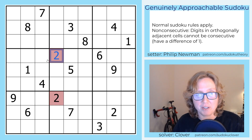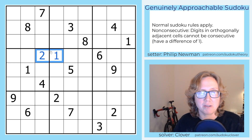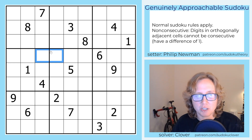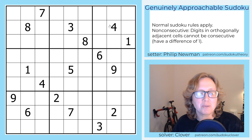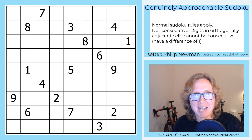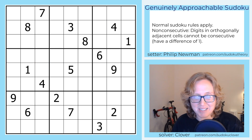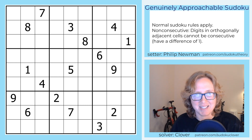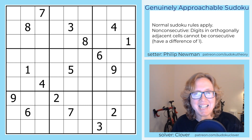In other words, they can't contain digits that have a difference of 1. So we couldn't place 1 and 2 here because those are consecutive numbers — they're not allowed to touch each other. This is a true blind solve; I haven't tested this one previously. Non-consecutive is not one of my strengths as a solver, so I'm curious to see how this works out.